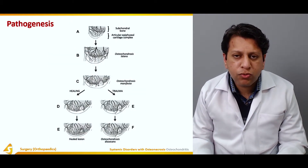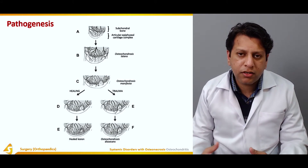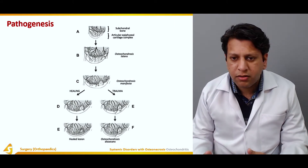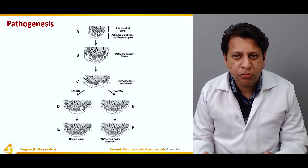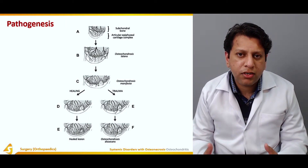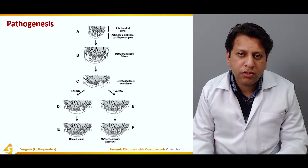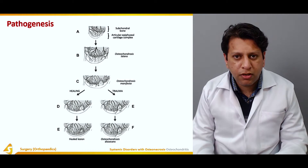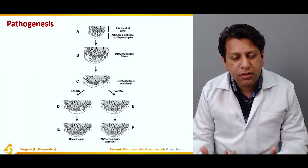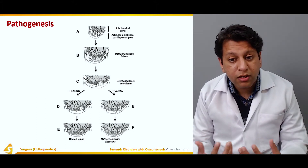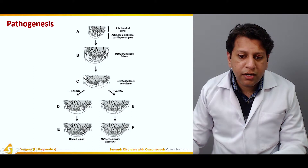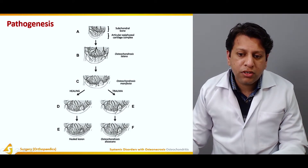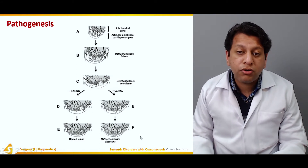What actually happens is that all the subchondral bone is present around the articular cartilage in the joint. Once that bone becomes necrosed, the articular cartilage — which is supplied by the bone area, because the articular cartilage does not have its own blood supply — loses oxygen and molecules that are transfused from the bone. Once the bone supplying the articular cartilage dies, this results in necrosis of the articular cartilage as well. If it heals, it gets collected as a healed region, but if it does not heal, a small part of the bone separates along with the articular cartilage, leading to osteochondrosis or osteochondritis dissecans.